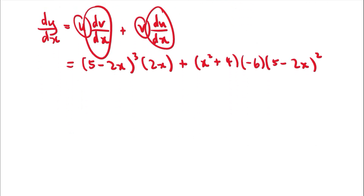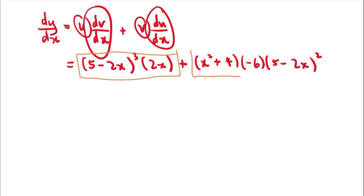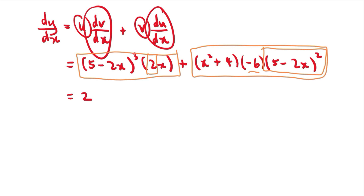We've applied the product rule. Now we simplify by factorizing. Looking at the two terms, we find the common factors. The common factor is (5 minus 2x) squared, and numerically we have a common factor of 2 since one term has negative 6. So we factorize out 2 and (5 minus 2x) squared. Factorization is just a matter of division — let me show you the long way first so you can see what is happening.